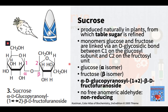Sucrose is a disaccharide composed of two monosaccharides — glucose and fructose. It is produced naturally in plants like sugarcane and beet, from which table sugar is refined. In sucrose, the monomers glucose and fructose are linked via an O-glycosidic bond between C1 of the glucosyl subunit and C2 of the fructosyl unit. Glucose exists predominantly in the alpha form and links to fructose, whereas fructose exists in the beta-isomer and links to glucose. The systematic name of sucrose is alpha-D-glucopyranosyl-1,2-beta-D-fructofuranoside. In sucrose, the two anomeric groups of glucose and fructose share a glycosidic bond, thus making it one of the non-reducing sugars.